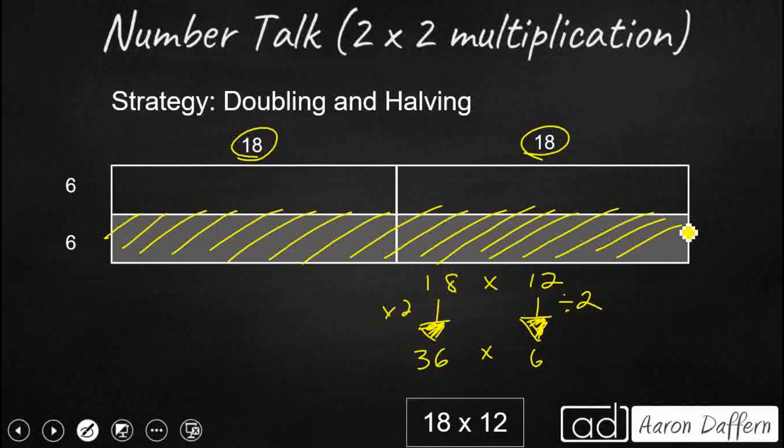So 6 times 6 is 36. 6 times 30 is 180. 180 and 36, you guessed it, 216.